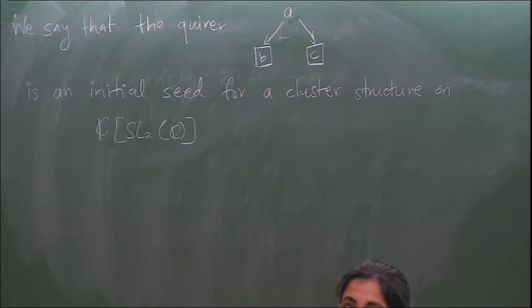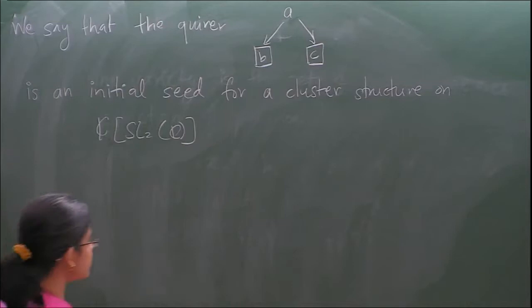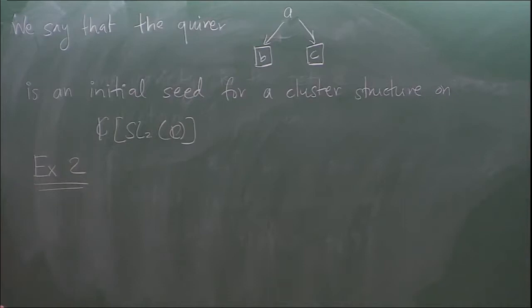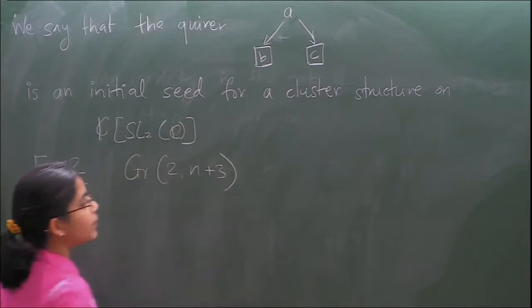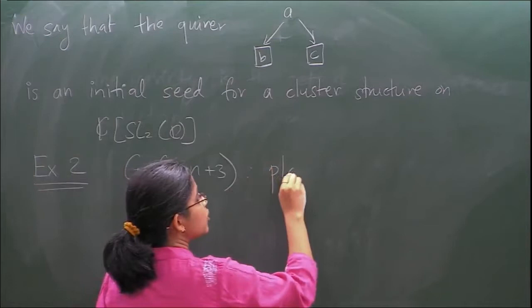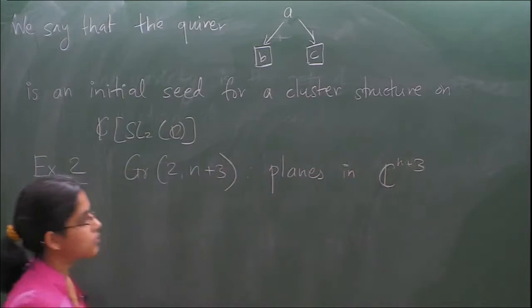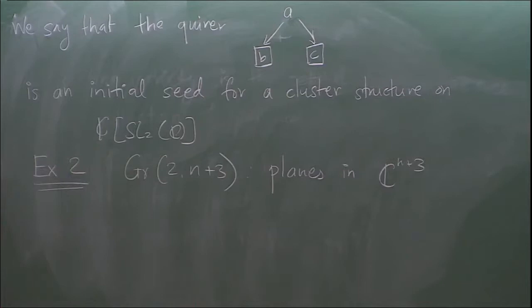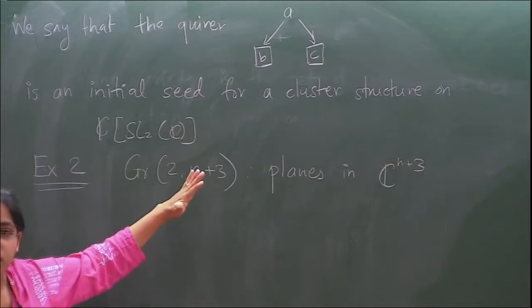Example two is Grassmannians — specifically planes in C^(n+3), i.e., two-dimensional subspaces. You will see why I write n+3 instead of n. This is a projective variety, and I will say more about it after lunch.